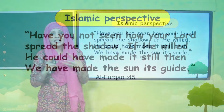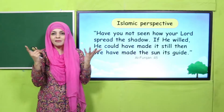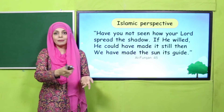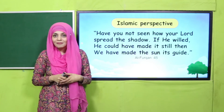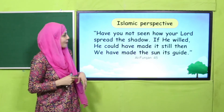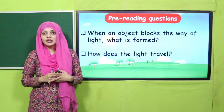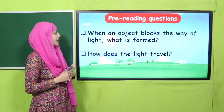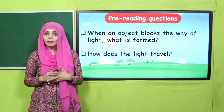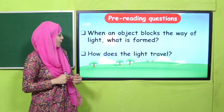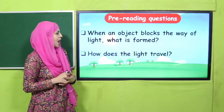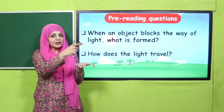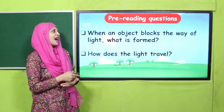Let's quickly move forward towards some pre-reading questions. When an object blocks the way of the light, what is formed? Shadow - very good. How does light travel? It travels in a straight line. Very nice.